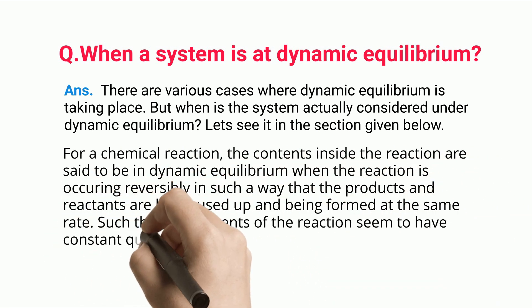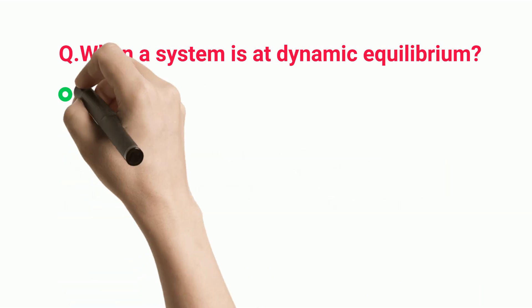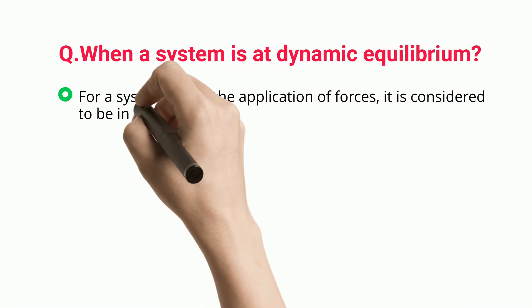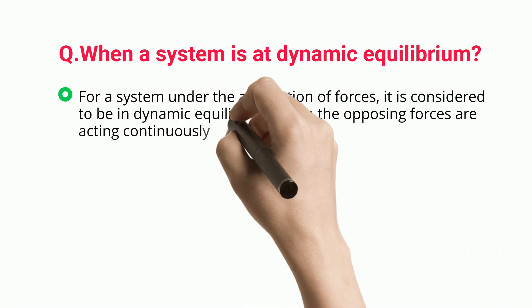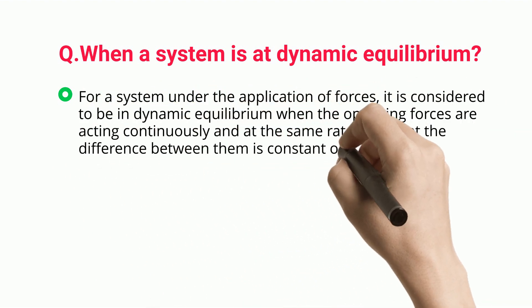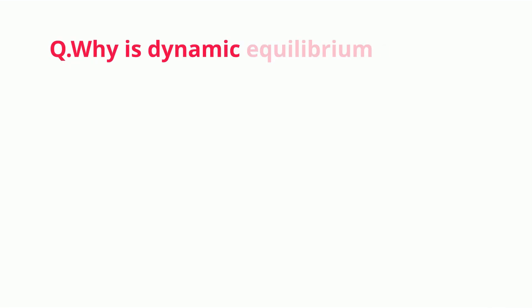The contents of the reaction seem to have constant quantities. For a system under the application of forces, it is considered to be in dynamic equilibrium when the opposing forces are acting continuously and at the same rate, such that the difference between them is constant or zero.